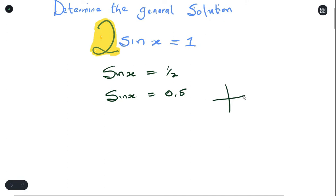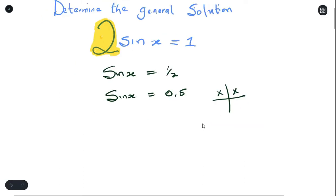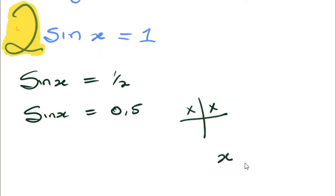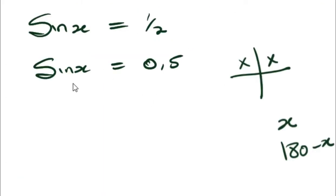Sine is positive in the first quadrant and in the second quadrant. So we're going to get two answers. The first answer is just x, and the second answer is written as 180 minus x, because those are the equations for those two quadrants. The next step is to get our reference angle.